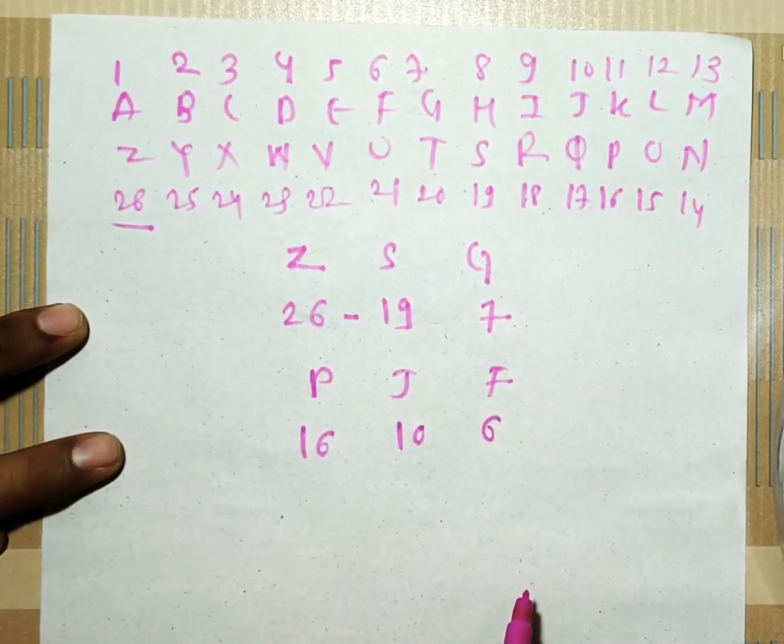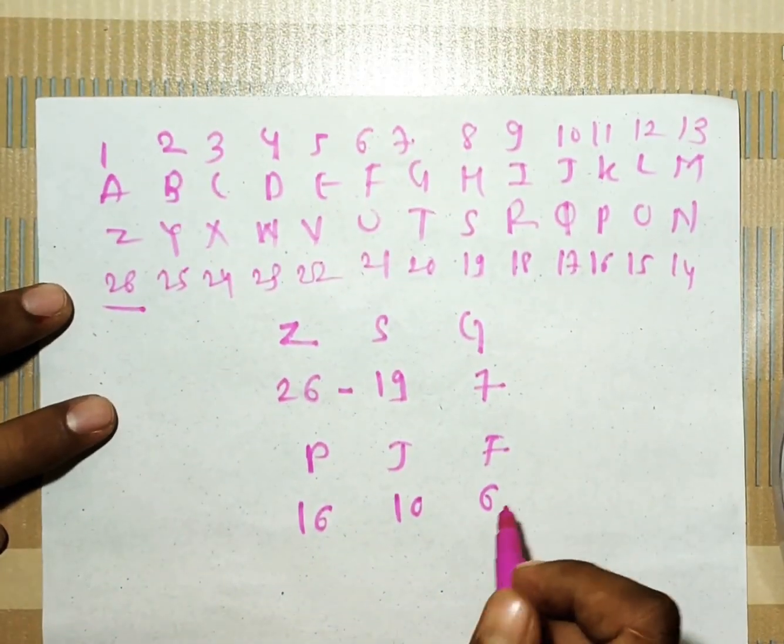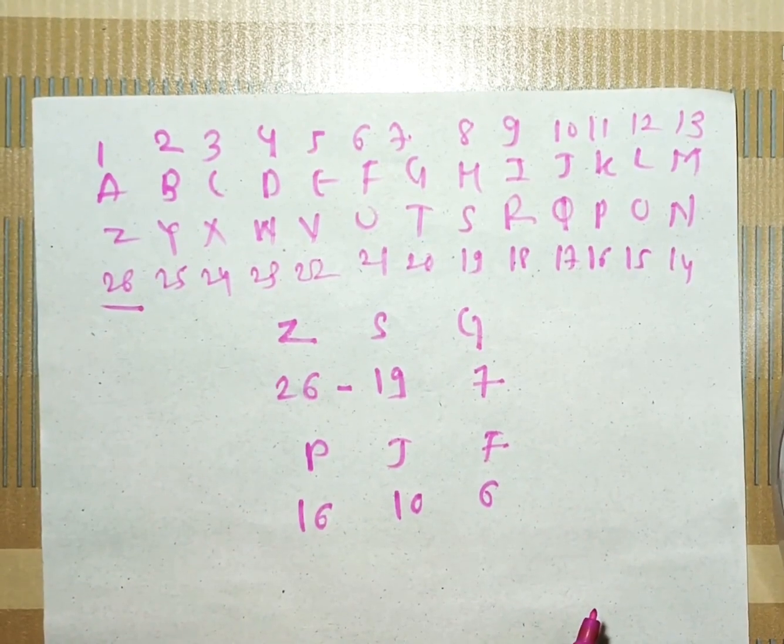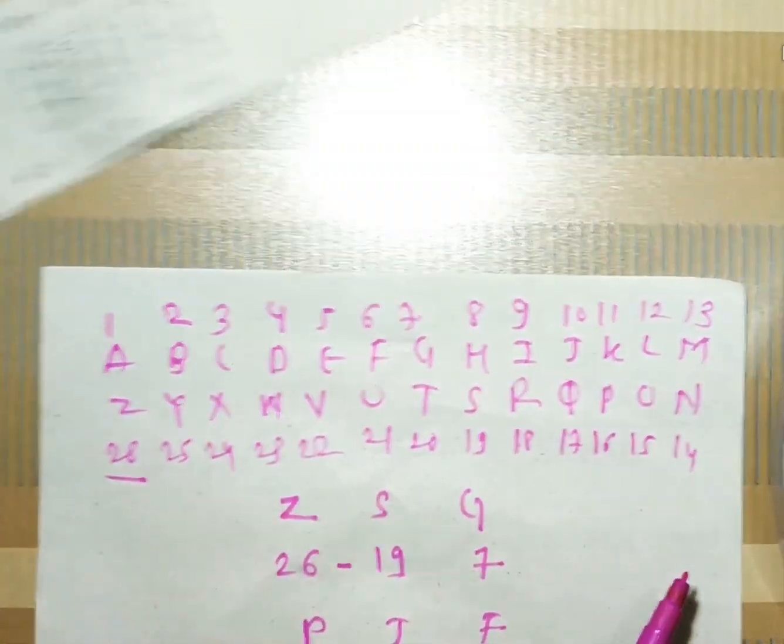Again observe carefully. 16 minus 10 is 6, and at the 6th position there is F. So we can conclude easily that we have to calculate Q, I and what is the next letter. Okay.